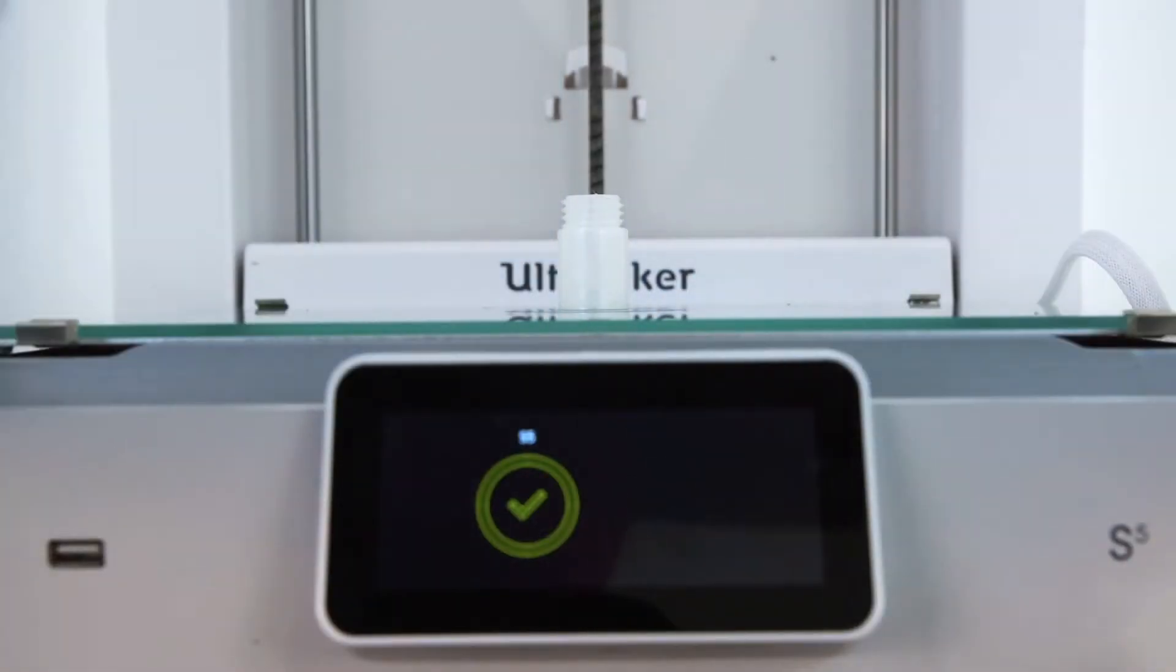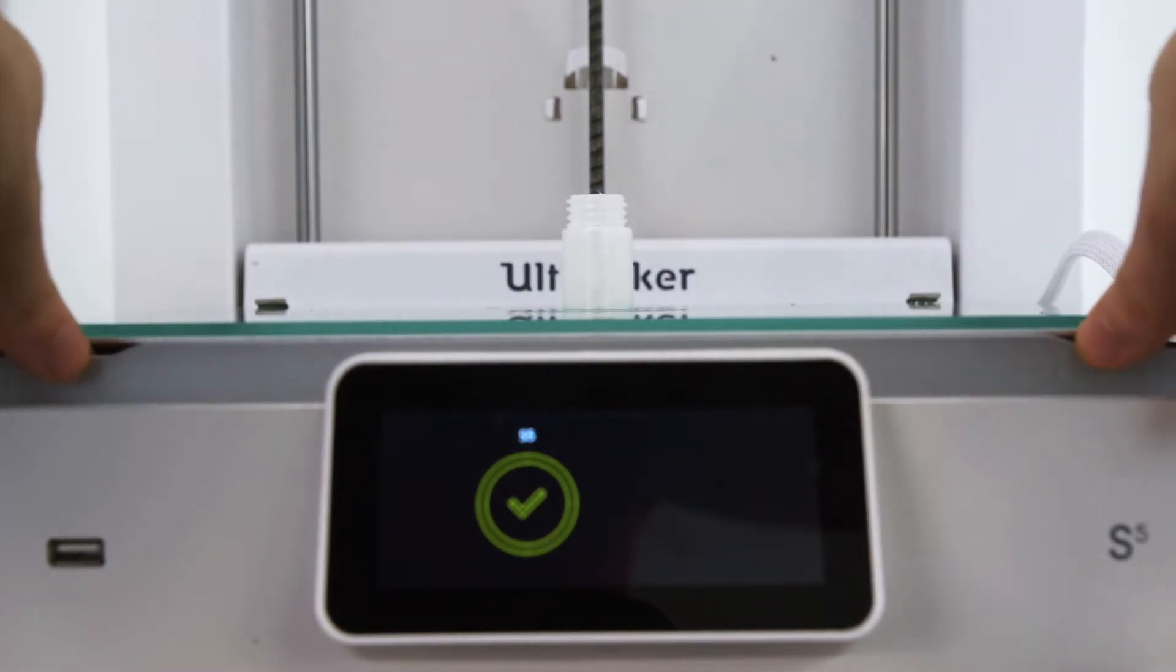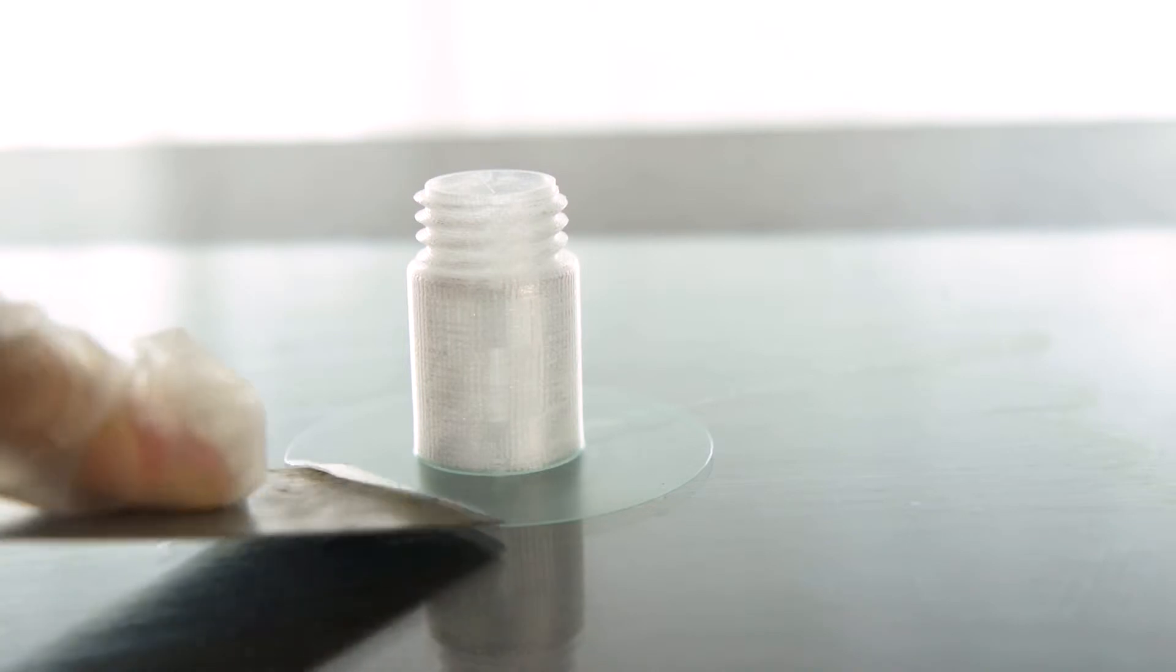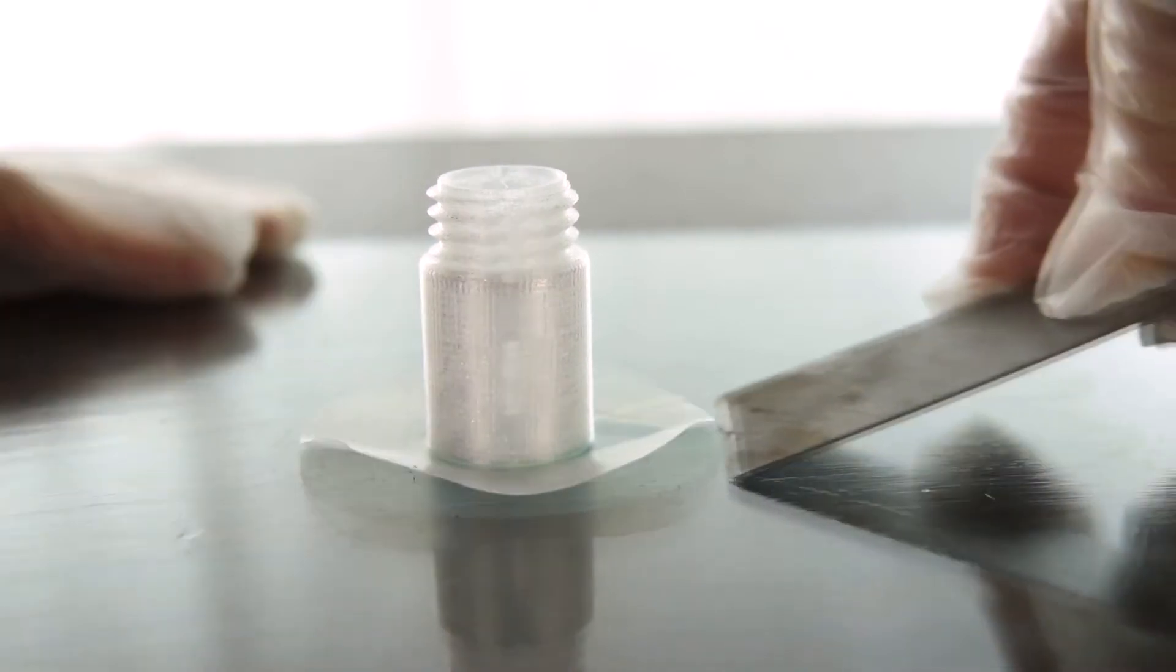Magigoo sticks when hot. Wait for the print to cool and remove the build plate from your printer. The printed part should be easy to detach. If not, a removal tool can be used by inserting it gently under the print.